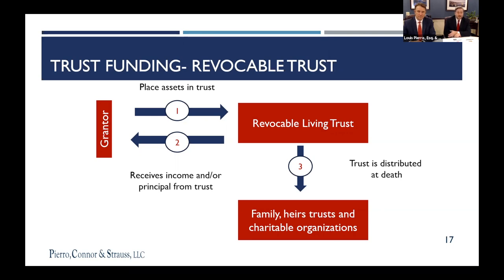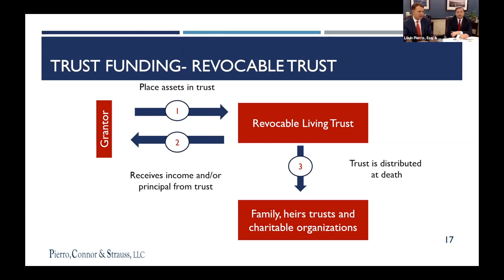If you need to do something quickly and there's real property in an estate, those situations create difficulties before someone is appointed. When the judge appoints a guardian ad litem, that guardian ad litem has to go out and do an investigation, interview all the parties, draft a report back to the court. Who pays for all that? The estate pays for that — it's money out the window.